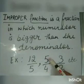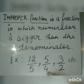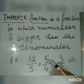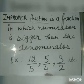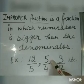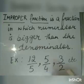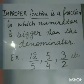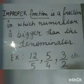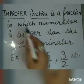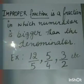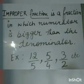Another example is 5 upon 4. 5 is the numerator and 4 is the denominator. Since 5 is greater than 4, this is an example of an improper fraction. Similarly, 3 upon 2 is an example of an improper fraction in which the numerator 3 is greater than the denominator 2.